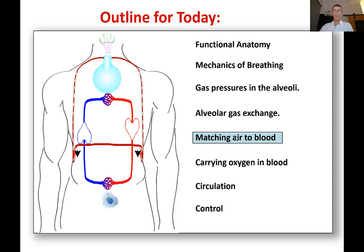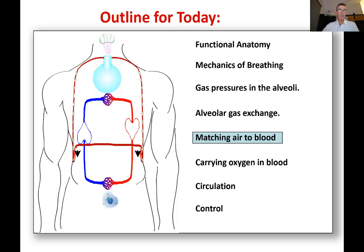Moving down the list, we're now down to matching air to blood. That's called ventilation-perfusion matching. In this diagram, which is completely false, you can see one capillary bed and one alveolus. Actually, there are tens, hundreds of millions of alveoli, each one with a capillary bed, spread throughout the lung. So there's no central control mechanism to make sure that the air goes to the same alveoli as the blood.